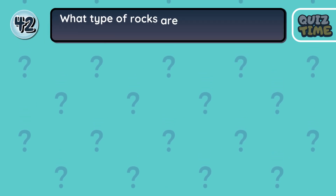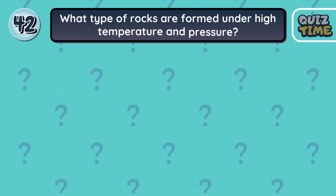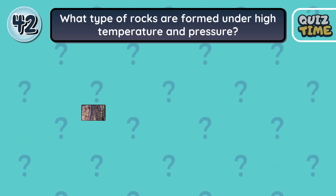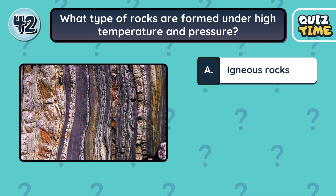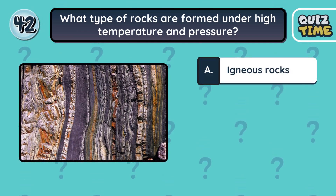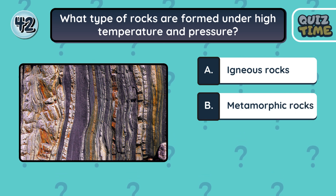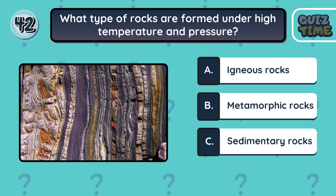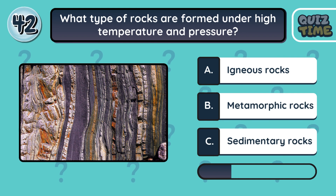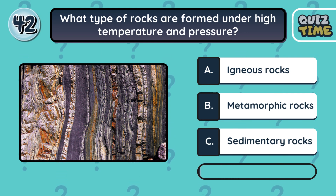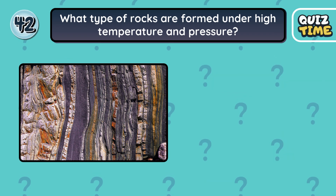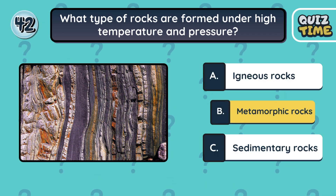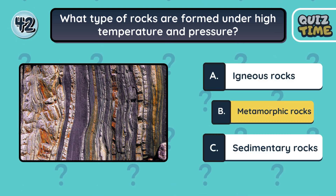Number 42. What type of rocks are formed under high temperature and pressure? A. Igneous rocks. B. Metamorphic rocks. C. Sedimentary rocks. The correct answer is B. Metamorphic rocks.